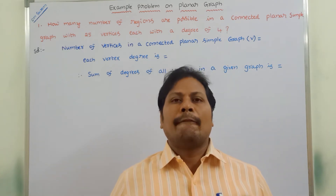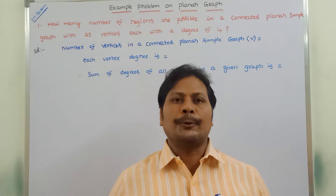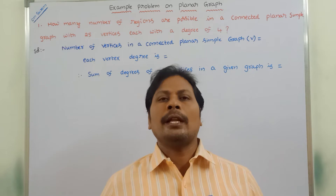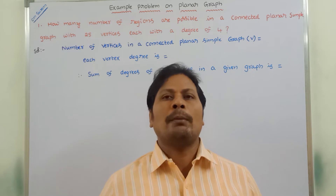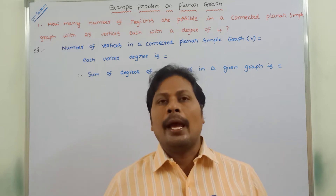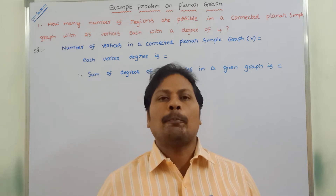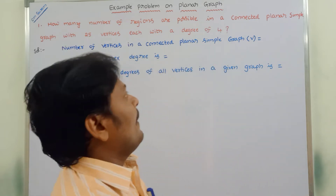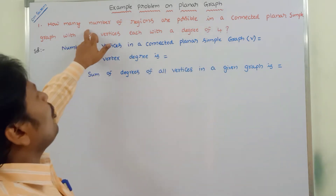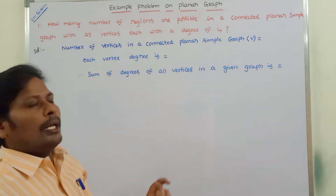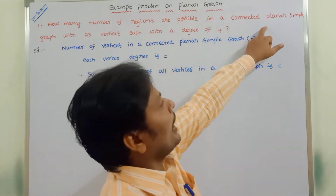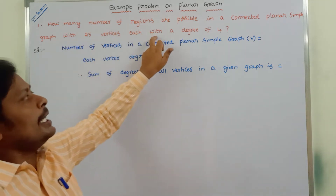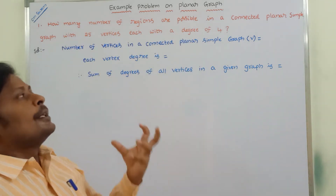Hi friends, welcome back to our YouTube channel. Today we have to discuss one of the most important problems in discrete mathematics: an example problem on planar graphs and Euler's formula. The given problem is: how many regions are possible in a connected planar simple graph with 25 vertices, each with a degree of 4?